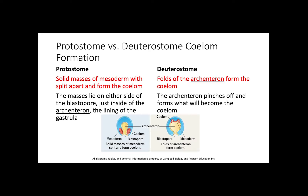Another major difference between protostomes and deuterostomes is in coelom formation. In protostomes, solid masses of mesoderm will split apart and form the coelom. These masses lie on either side of the blastopore, just inside of the archenteron, the lining of the gastrula. If you look at the figure on the left, you'll see that for protostomes, they basically form two hard little solid masses right inside the edge of the gastrula.